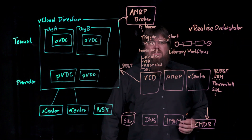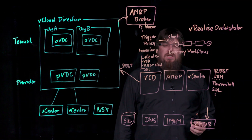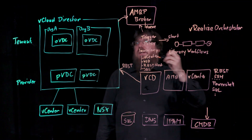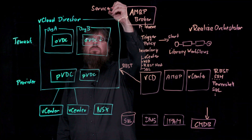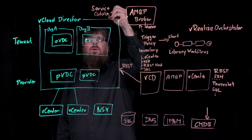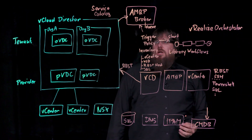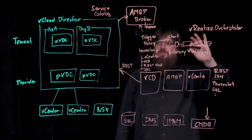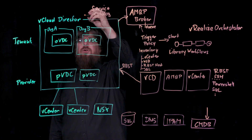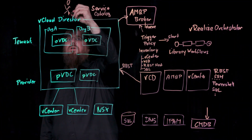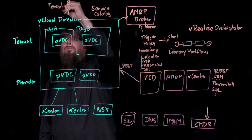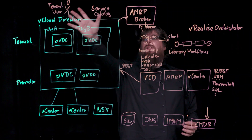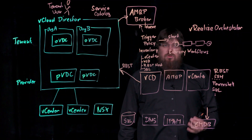The third scenario is to publish workflows from your Orchestrator server into the vCloud Director service catalog. This is a very powerful integration because it allows you to build workflows and then offer them as additional services in the vCloud Director UI, so that tenant users can request service items through the vCloud Director UI without even knowing that Orchestrator workflows are being called in the background to fulfill those services.